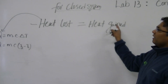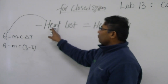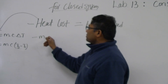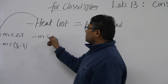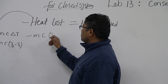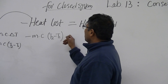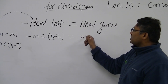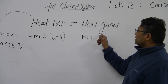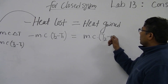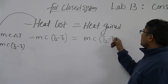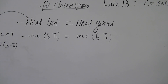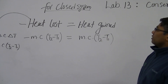Using this equation for heat lost — since it's losing heat, it's negative — the negative heat lost is equal to positive heat gain. So: negative M times C times (T2 minus T1) equals mass times specific heat times (T2 minus T1). In this experiment we're going to demonstrate this using a closed system to show how heat is conserved.